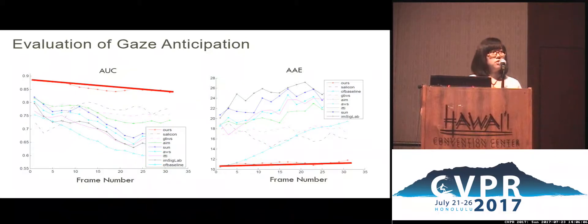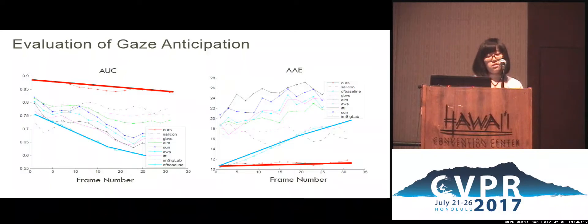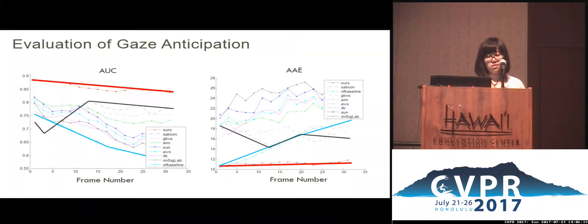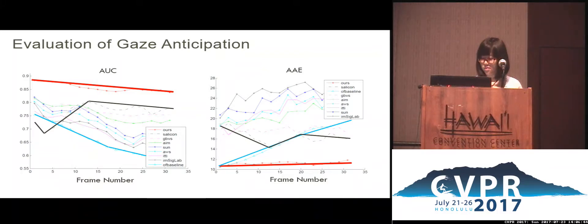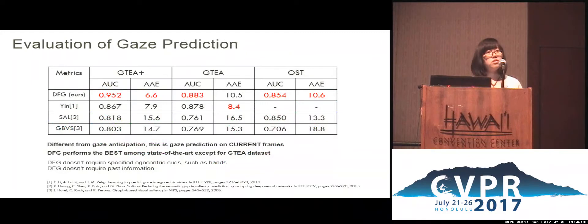The red curve is our method, which performs the best. The blue curve shows the optical flow baseline, and we can clearly see its performance drops dramatically over time, implying that gaze movement is not trivially linear. The rest are conventional saliency prediction methods. In particular, we include a 2D convolutional neural network for saliency prediction of static images, shown in the black curve. This infers that the temporal dependency of gaze states also plays an important role in gaze anticipation. Although our algorithm is not specifically trained for the existing gaze prediction problem on current frames, our method is still the best, except for the GTA dataset.